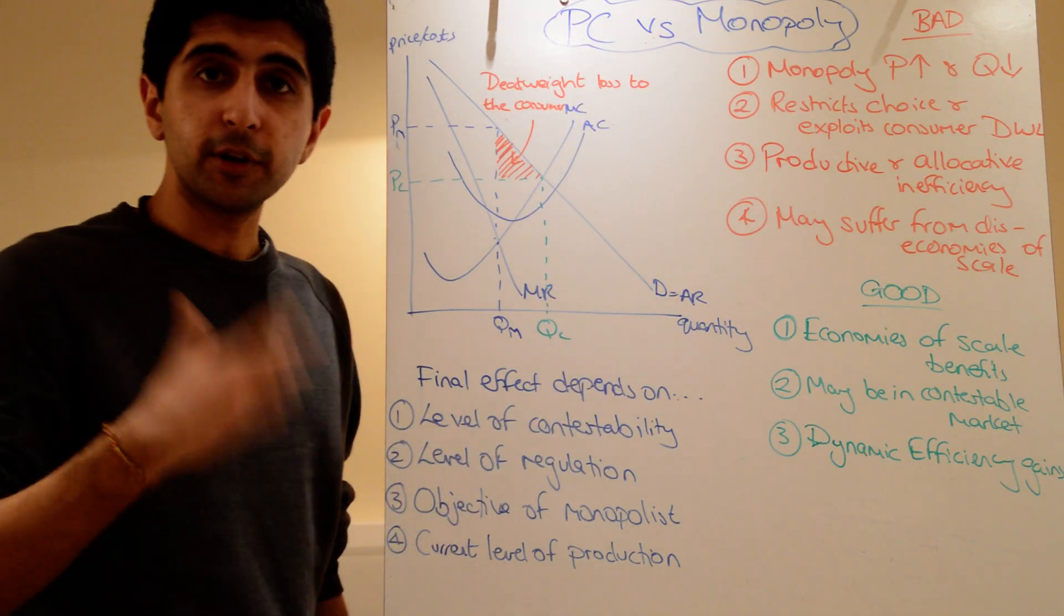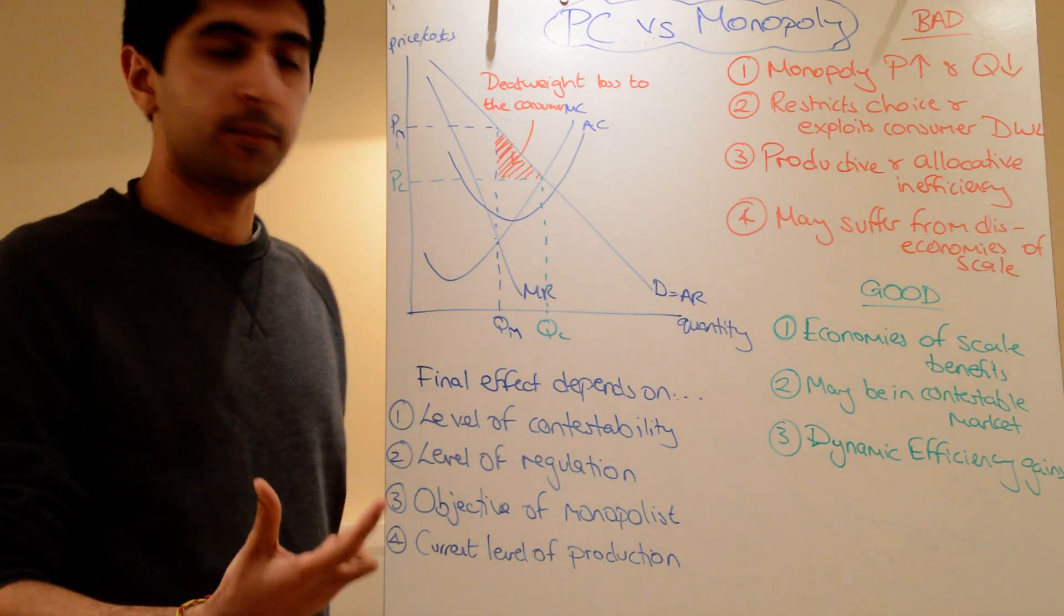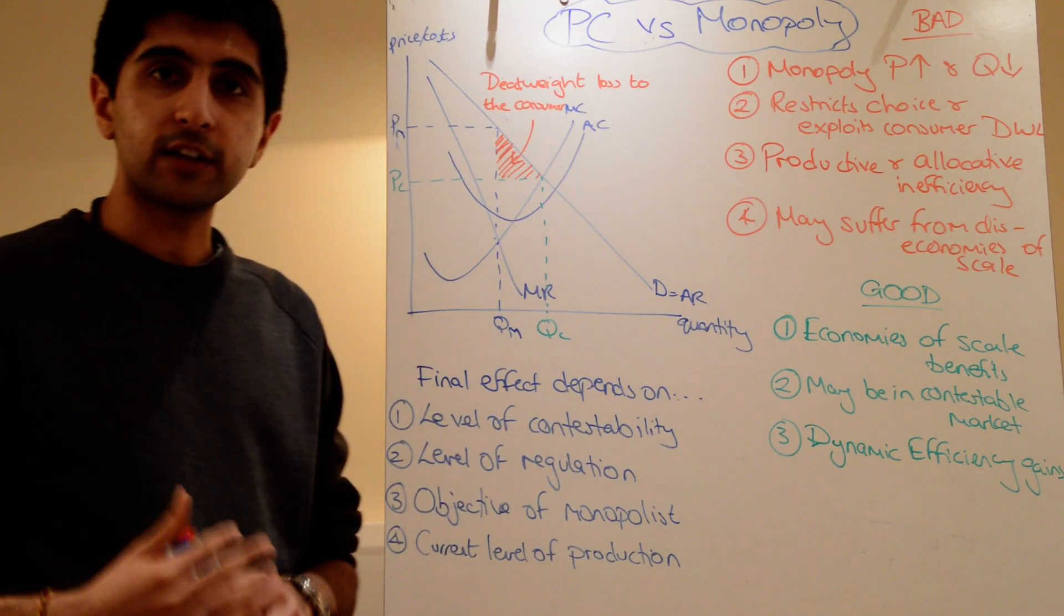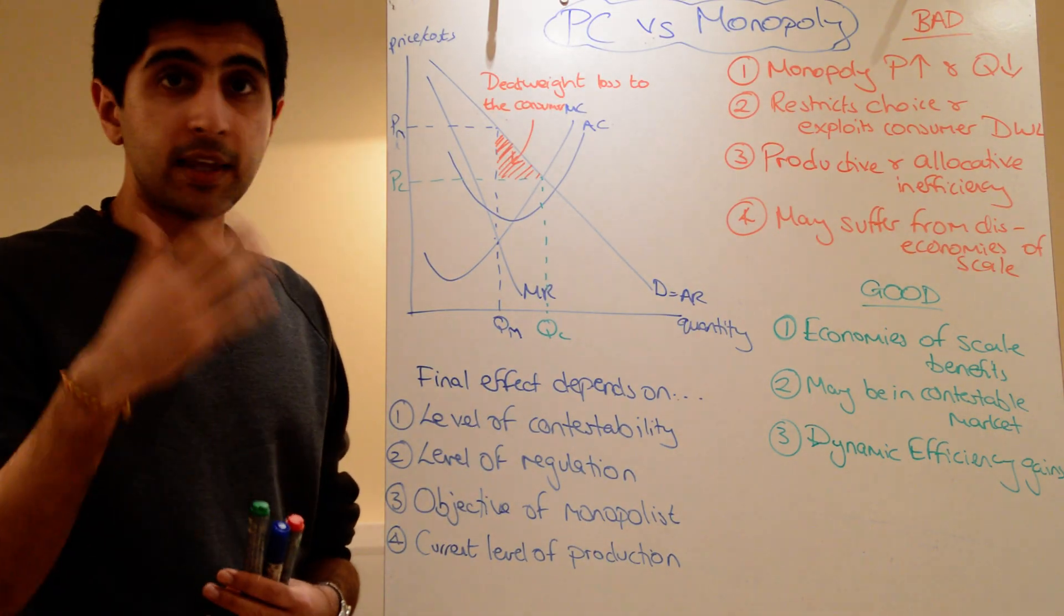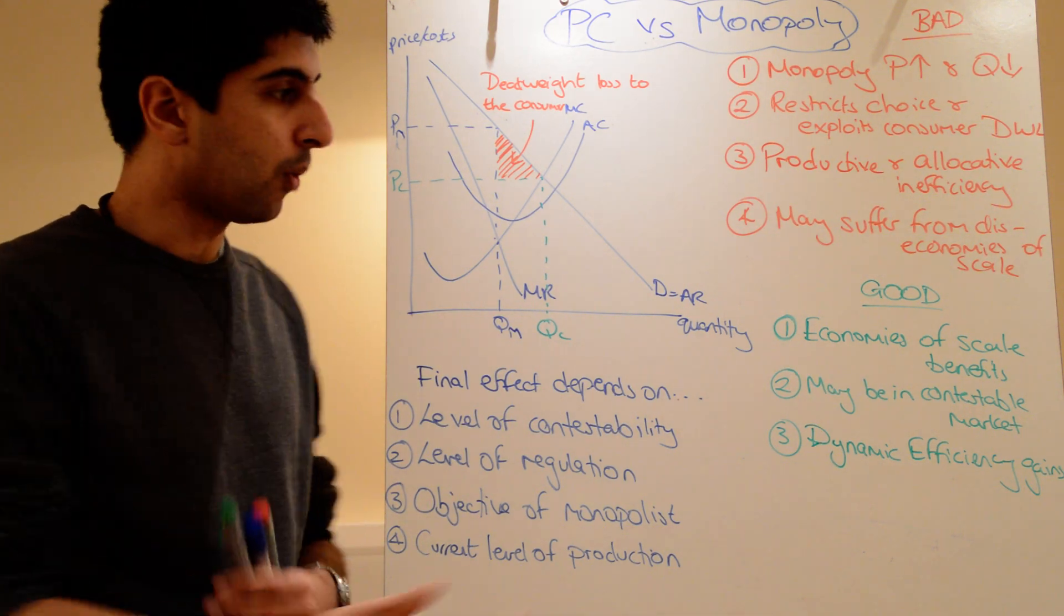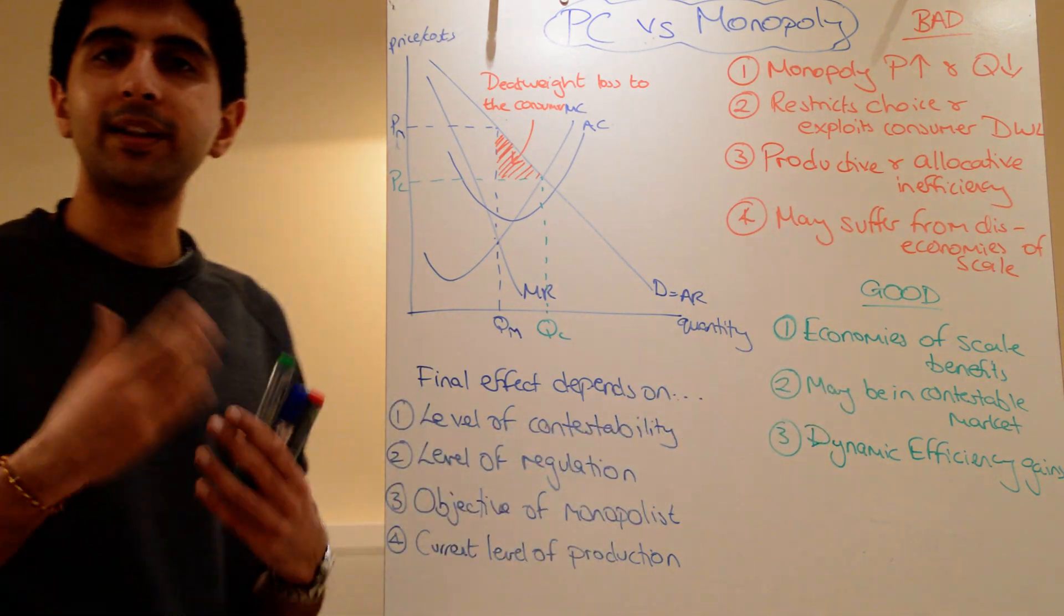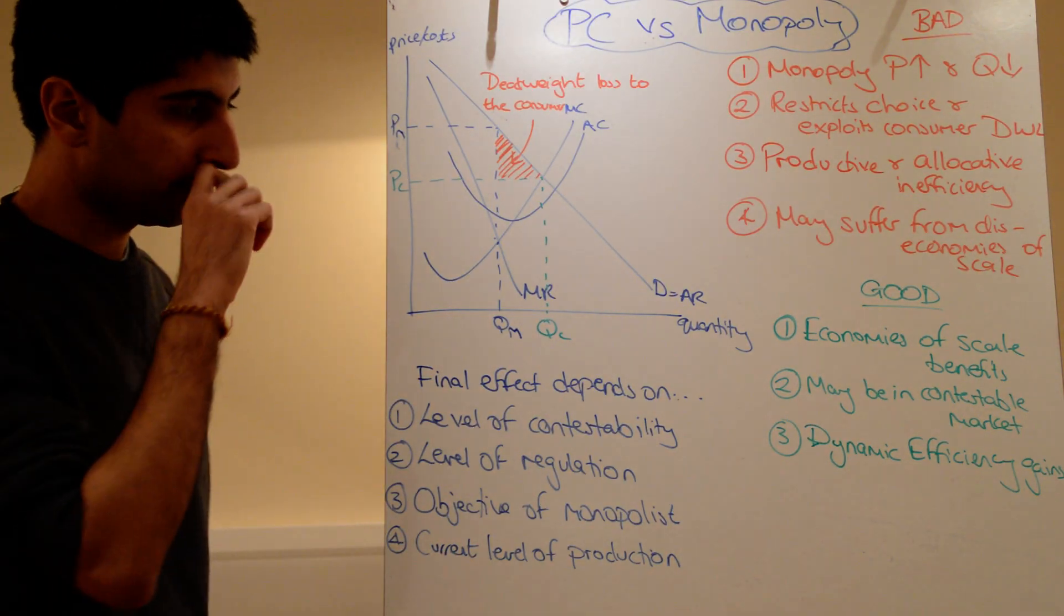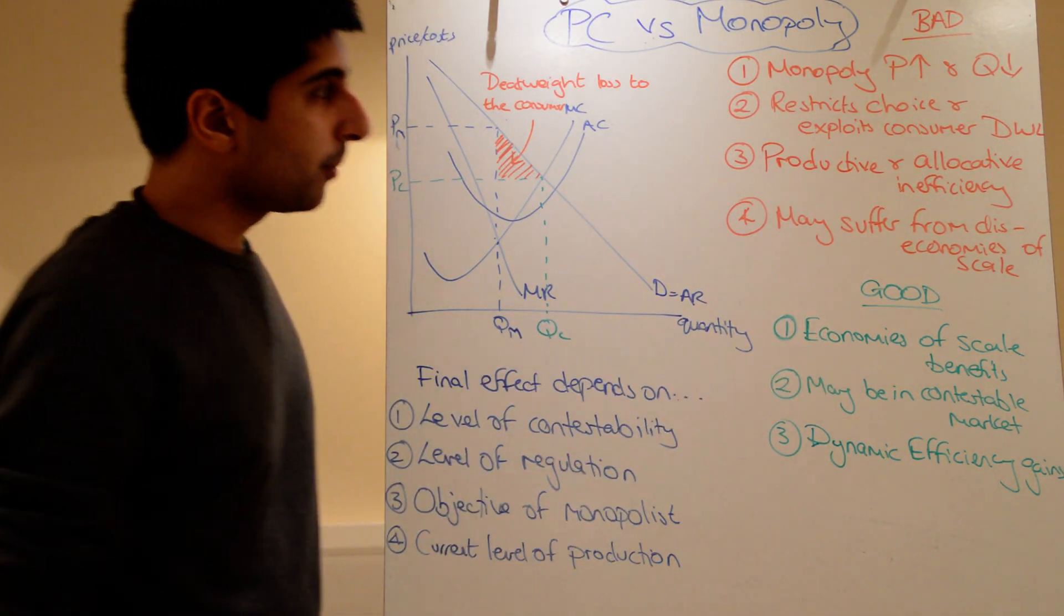Whereas for a monopoly, you've got a much greater chance to exploit all economies of scale. And if you do so, it's good for you as a firm because your costs actually reduce, which means you can maximize your profits even more. And it's good for consumers because potentially it might lead to lower prices if these lower costs are passed on.